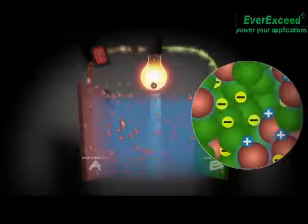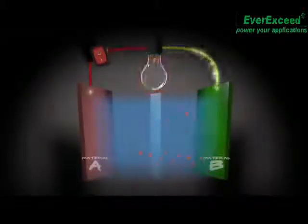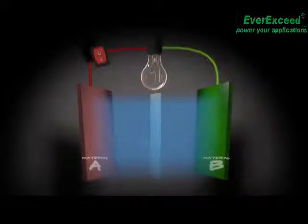As the battery discharges, electrons and ions are making their way from A to B. When you can't fit any more material A ions into material B, the battery is fully discharged.